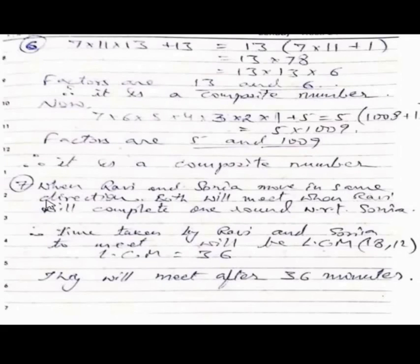When Ravi and Sonia move in the same direction, both will meet when Ravi will complete one round with respect to Sonia. Then they will meet. It means Sonia will be one round ahead of Ravi, then they will meet.